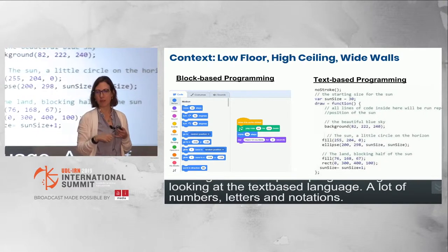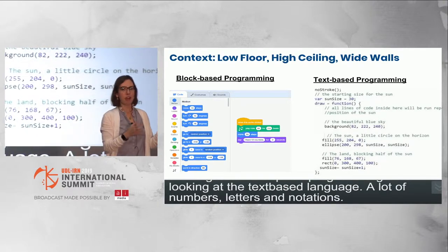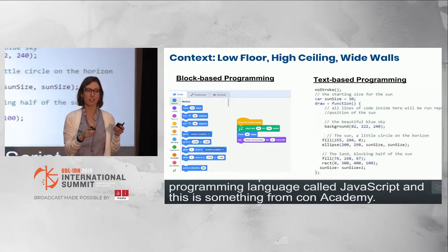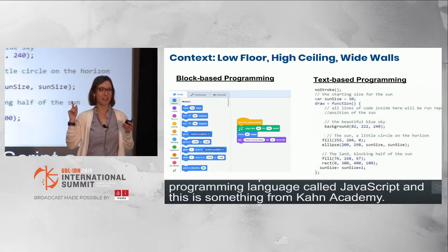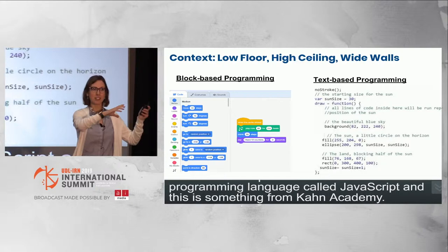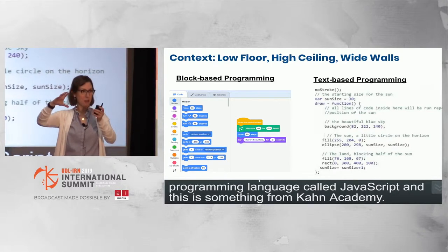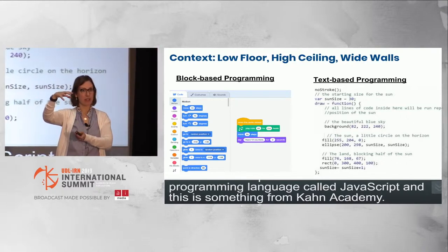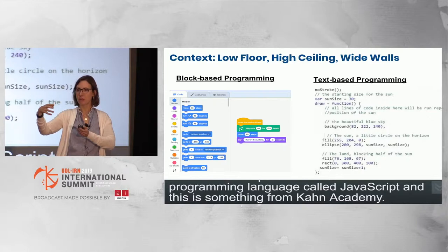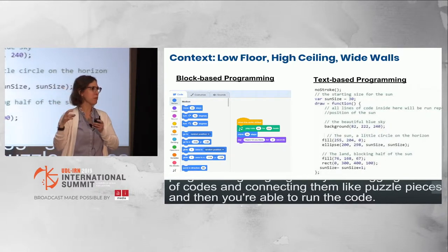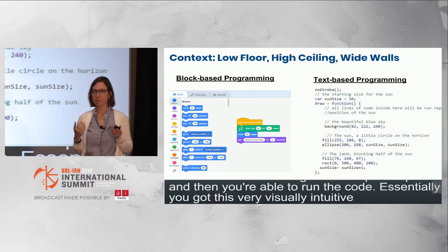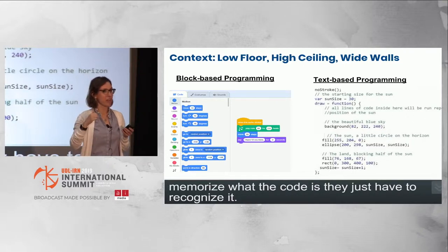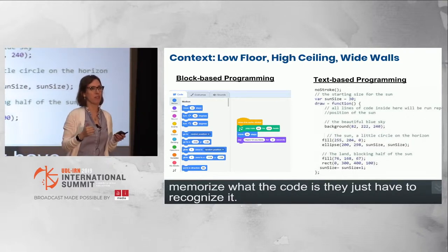This is an example of a text-based programming language called JavaScript, shown here from Khan Academy. The other kind of programming environment used a lot with children — and even some universities — is block-based, like Scratch. Essentially you're dragging blocks of code and connecting them like puzzle pieces, then running the code. It's a visually intuitive environment where kids don't have to memorize code, they just have to recognize it. There are affordances and challenges to both, and questions about how to transition children between them.